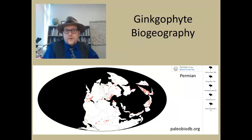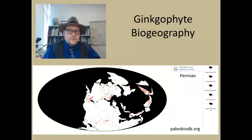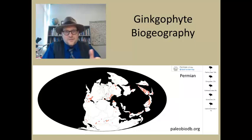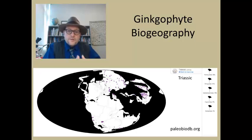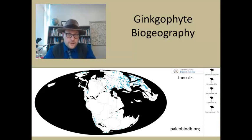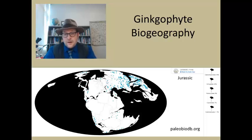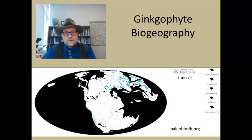Let's now look at the fossil ginkgophytes in terms of changes in biogeography and abundance. Data from the Paleobiology Database reveals various trends. In the Permian, fossils are widespread — this is the time of the supercontinent Pangea — with most occurrences in what is today Asia. During the Triassic, they are equally common, mostly in the Northern Hemisphere, but also found in other continents including the southern hemisphere. As we see the splitting of the supercontinent Pangea in the Jurassic, ginkgos are found in both hemispheres, with remains in South America, Australia, Africa, India, and Antarctica, though the vast majority of occurrences are in Asia.